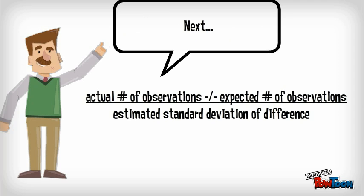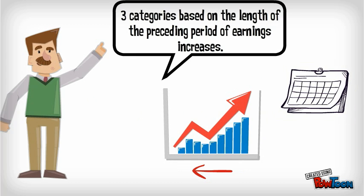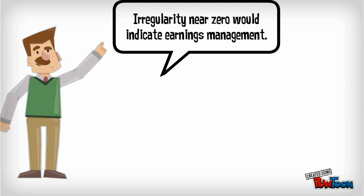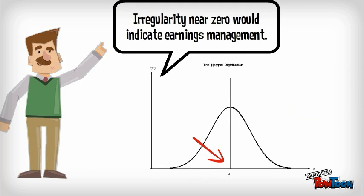The researchers did this for the sample as a whole, and they also divided the sample in three categories, based on the length of the preceding period of earnings increases. An irregularity near zero would indicate earnings management.